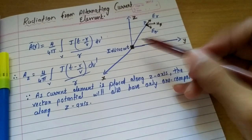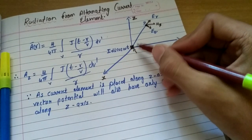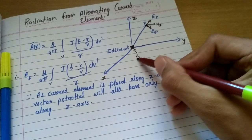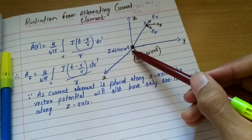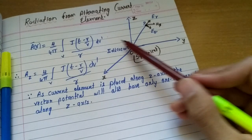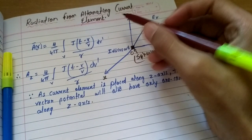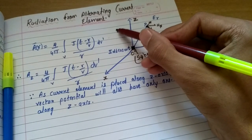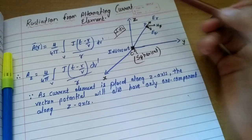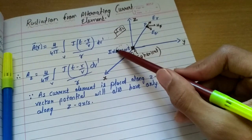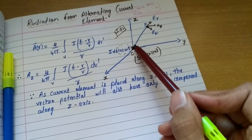Let us first consider a current element placed at the center of the spherical coordinate system. This is the origin O and the current element is IDL cos(ωt). Why cos(ωt)? In electromagnetics, we call a current element IDL only, but here the current element is an alternating current element, so we are considering this sinusoidal part cos(ωt). This current element is placed along the z-axis.